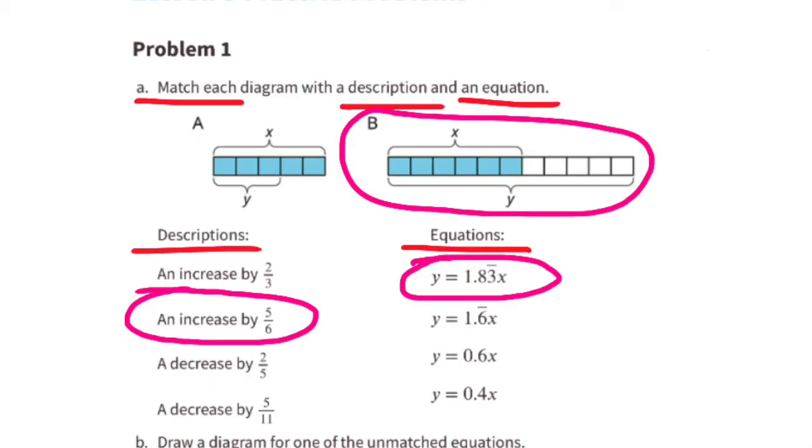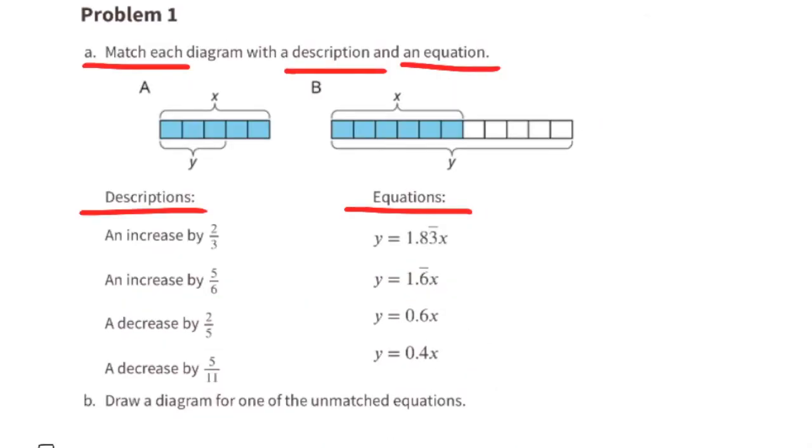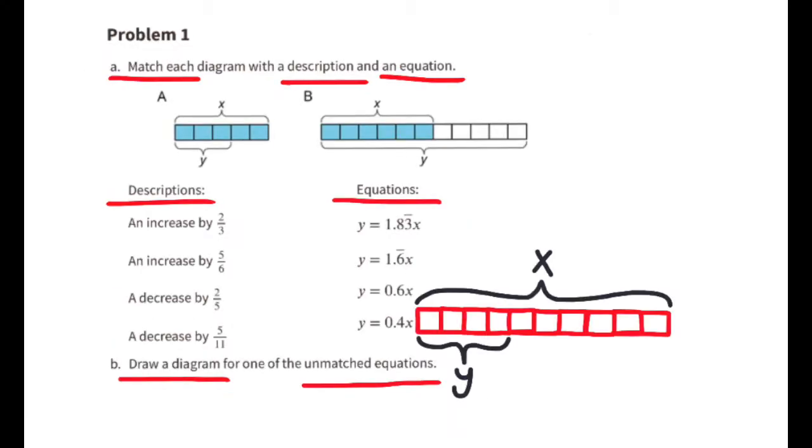Part b: Draw a diagram for one of the unmatched equations. I went with the equation y equals 0.4 times x. In my diagram, you can see that x equals ten-tenths and y equals four of the ten-tenths, so y equals four-tenths of x.